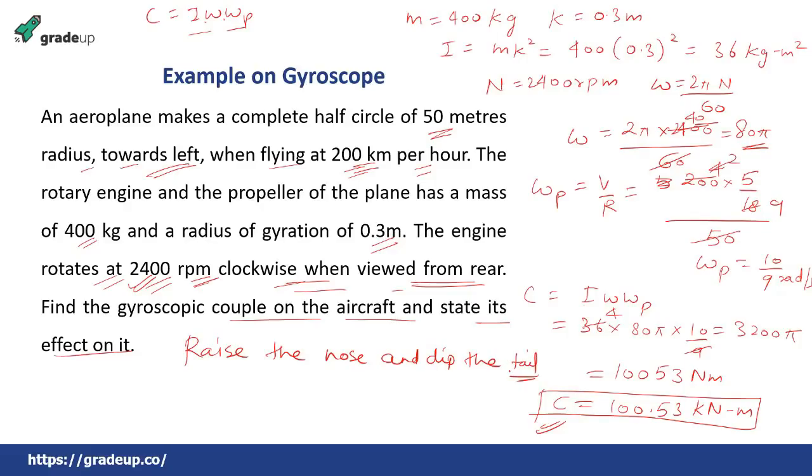This is the example of gyroscope that I have considered because no question has been asked in the GATE examination of gyroscope so far. But this is the only thing which can be done either the omega p can be given straight away. And if it is not given. So only this thing can be given in which you have to find the omega p like this. And then it is very simple i omega omega p c the gyroscopic couple.